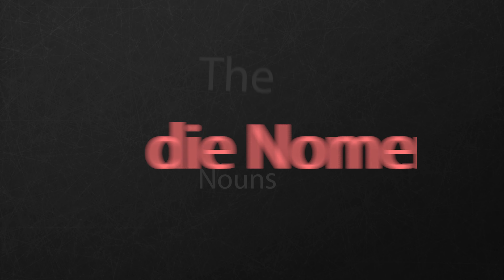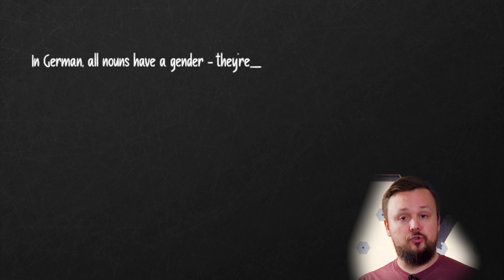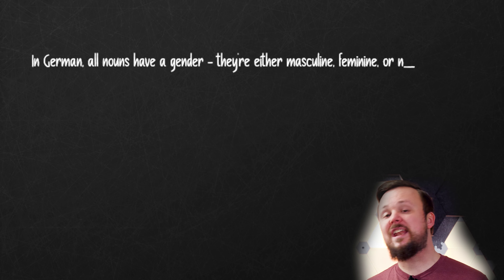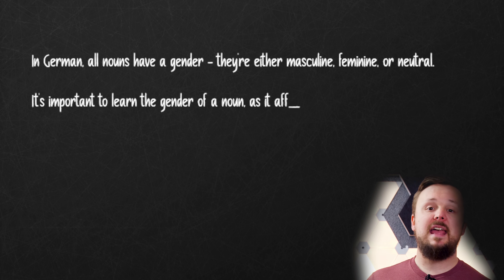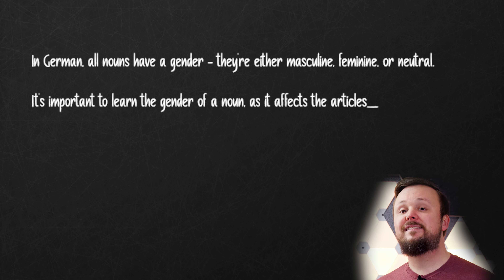Lasst uns anfangen. Learning a new language can be daunting, especially when it comes to grammar and German. But fear not, because now we'll make sure that German grammar is easy and fun to learn. Let us get started with the nouns — die Nomen. In German, all nouns have a gender: they're either masculine, feminine, or neutral. It's important to learn the gender of a noun since it affects the articles and adjective endings used with it.